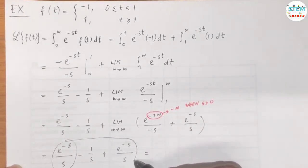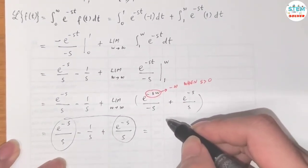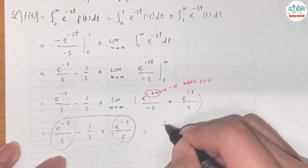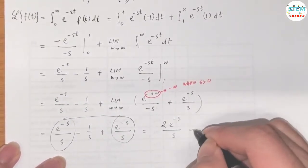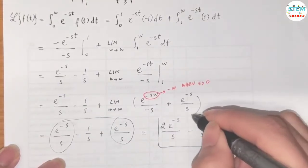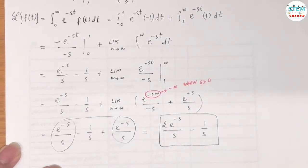So combine this. We have e to the negative s over s minus 1 over s. So this is your final answer.